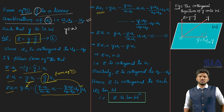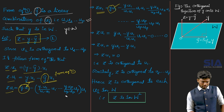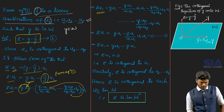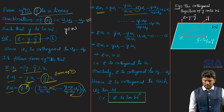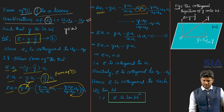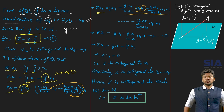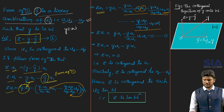After substitution and simplification, z·u_1 equals y·u_1 minus (y·u1)/(u1·u1) times (u1·u1) minus (y·u2)/(u2·u2) times (u2·u_1) minus ... minus (y·u_p)/(u_p·u_p) times (u_p·u_1). Since {u1, ..., u_p} is an orthogonal basis, u_i·u_1 equals zero for all i not equal to 1, so u_1 is the common surviving term in this multiplication.